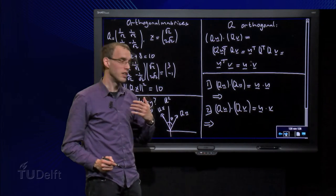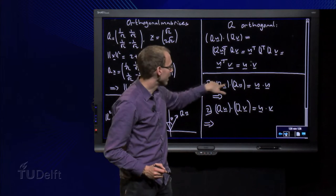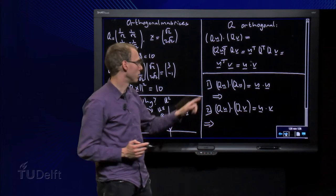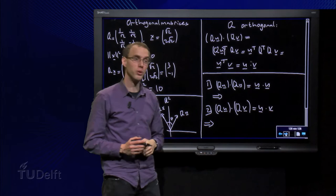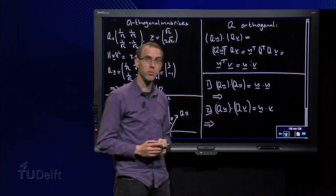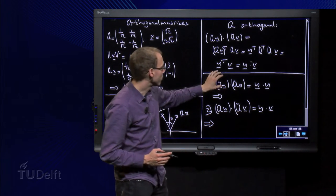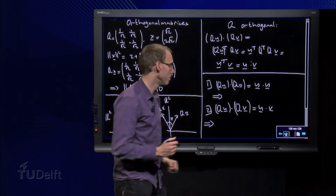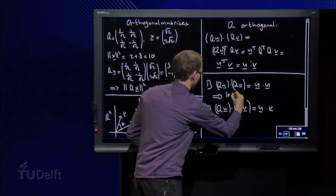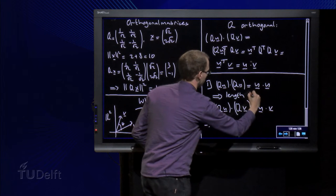So what does that mean? Well, if I take the inner product of the same vector with itself, so Qu inner product Qu, that equals U inner product with U. So the length is the same. The lengths are preserved.